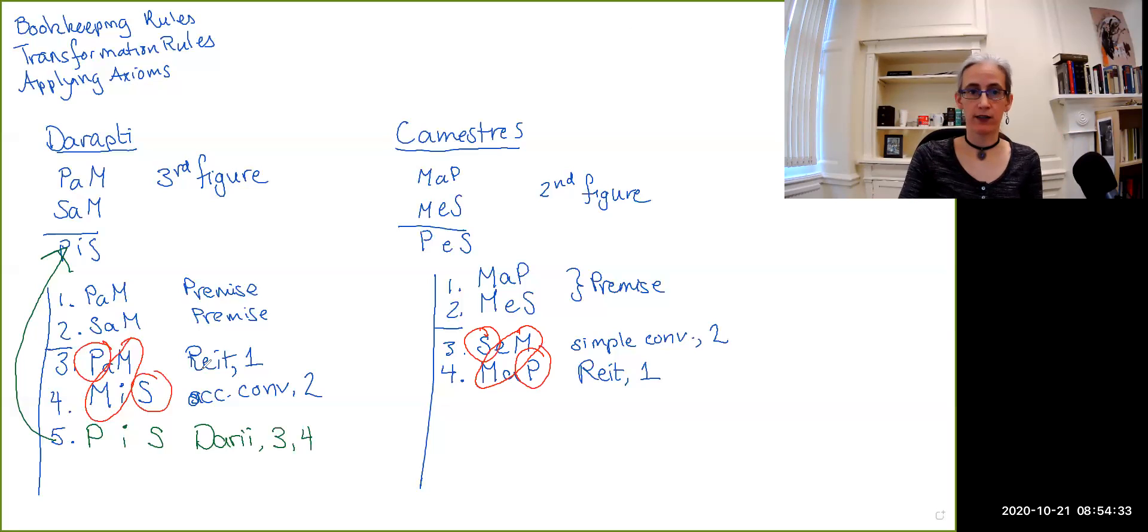So Celarent says if you have something in the first figure with an e major and an a minor, then I can take the predicate of the major and the subject of the minor and include that with an e copula. So this is an application of the axiom Celarent to lines three and four. So this gets us the conclusion SeP.